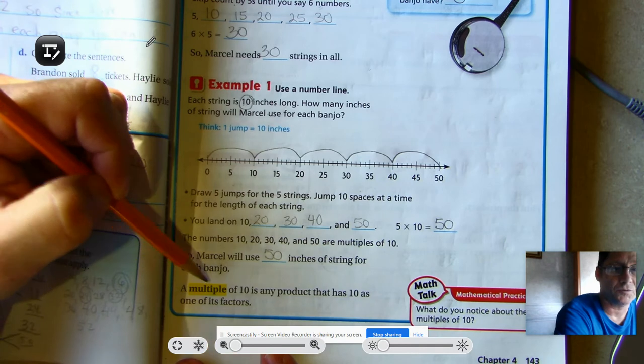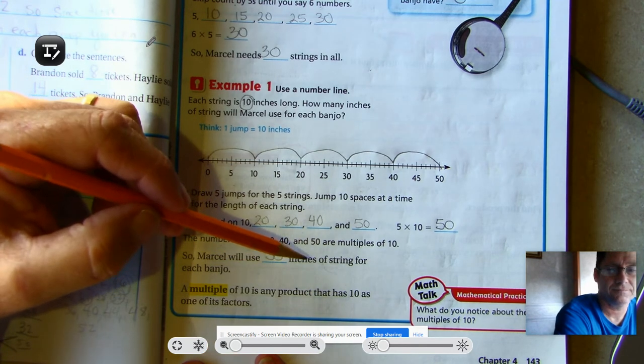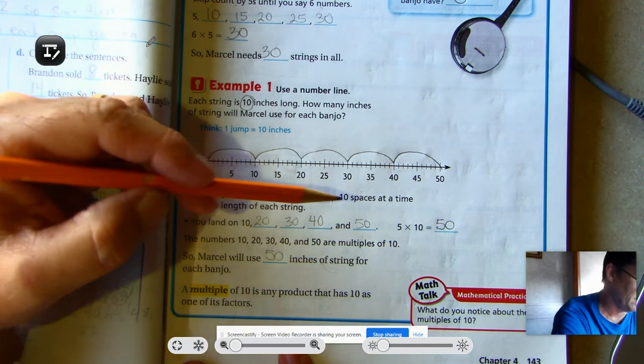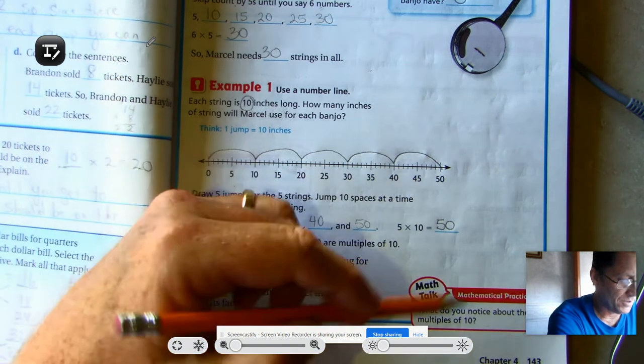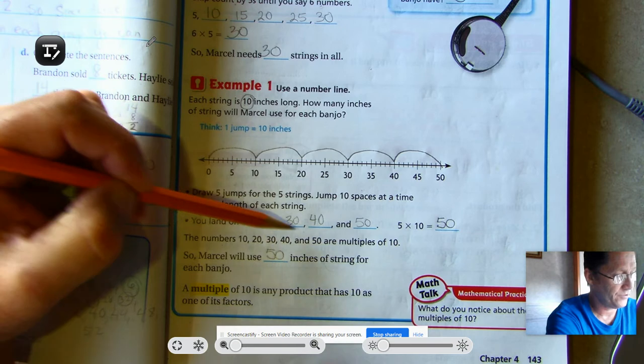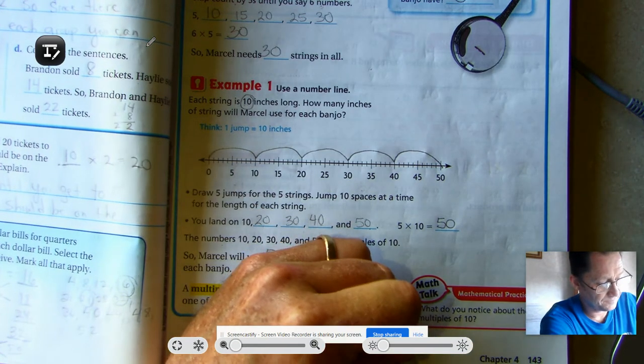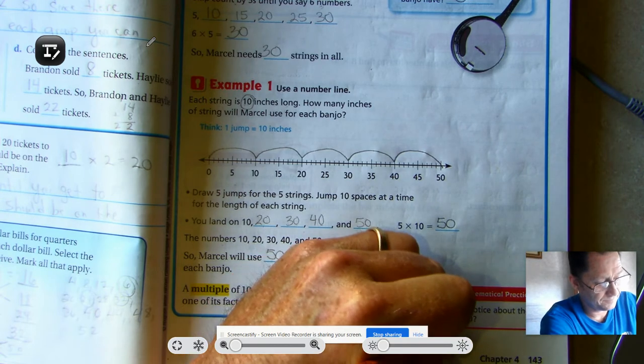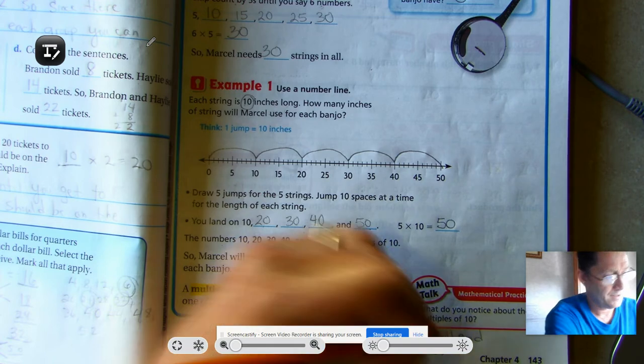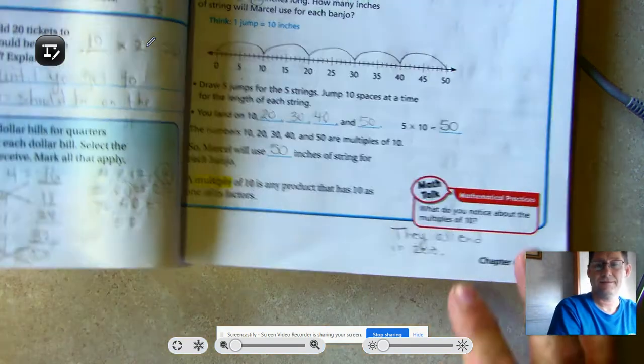And the definition for a multiple, a multiple of 10 is any product, the result of multiplication problem, that has 10 as one of its factors. And what do we notice about the multiples of 10, 20, 30, 40, and 50? One thing I notice is that they all end in zero.